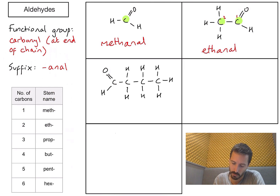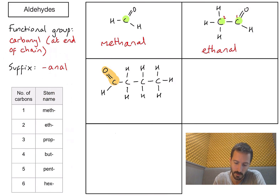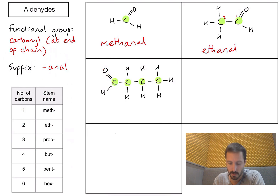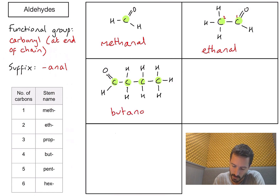Third example: I've drawn it the other way around so the carbonyl functional group is on the left-hand side, but it doesn't matter — that's still going to be labeled as the first carbon. Counting the carbons: one, two, three, four. Four carbons means the stem part of the name is going to be 'bute', and adding the suffix '-al' gives butanal.